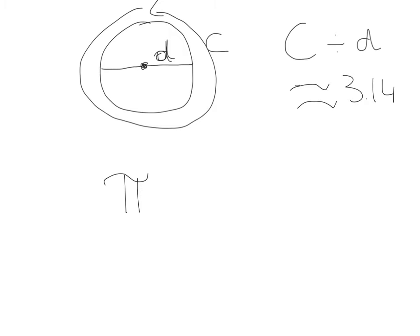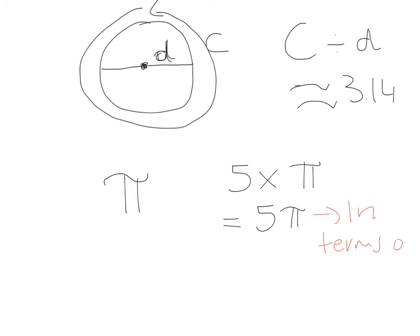If a question says to leave your answer in terms of pi — for example, five multiplied by pi — that means they literally just want you to leave pi as a symbol, so you'd write 5π. However, if they say to round your answer to two or three decimal places, you go on your calculator, multiply five by pi, press your S to D button, and you'll get your decimal answer. For example, rounded to two decimal places that would be 15.71. So just be aware that depending on how the question is asked, your answers might be slightly different.